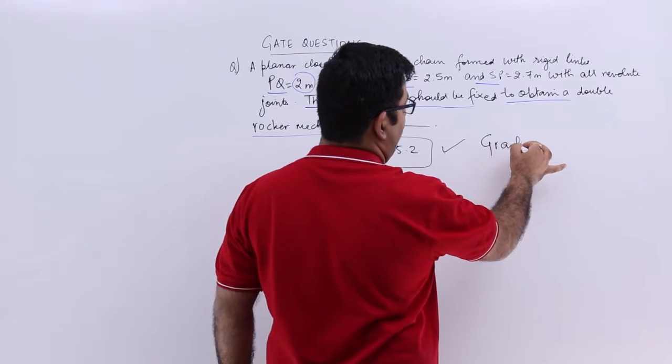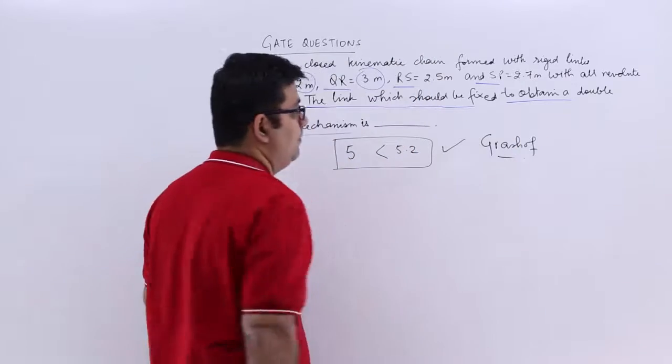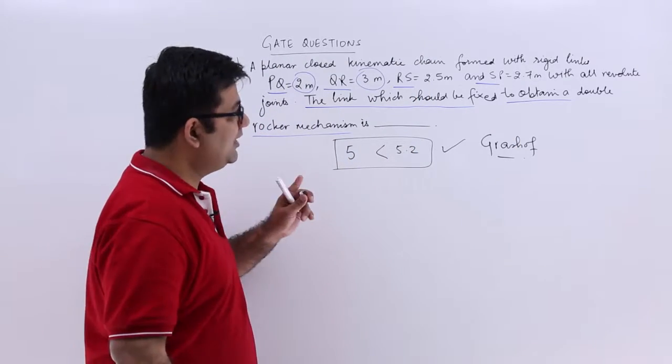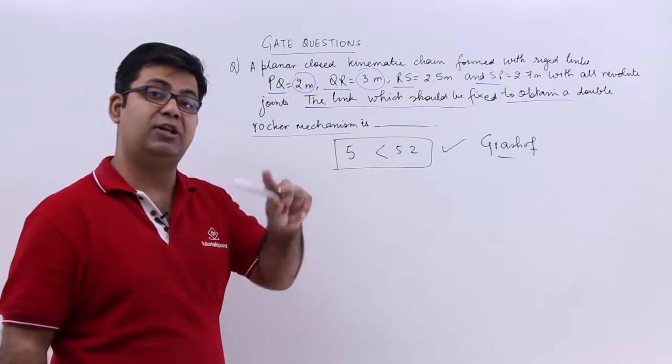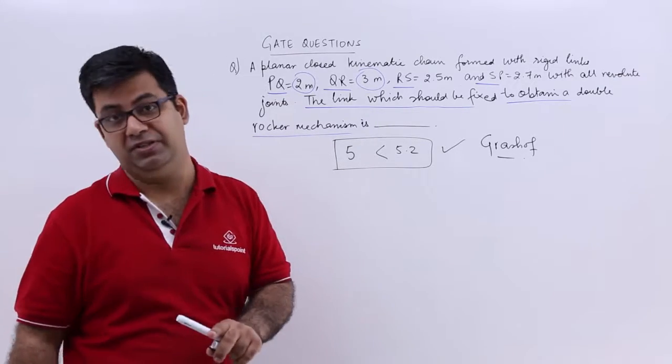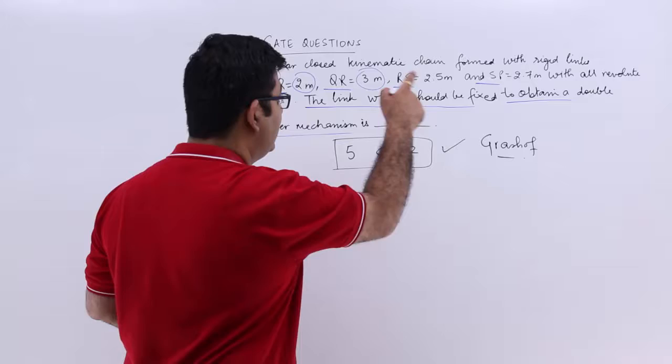So Grashoff is satisfied. Now, to obtain a double rocker, the rule is that the link opposite to the shortest link should be fixed. So if you draw this configuration...